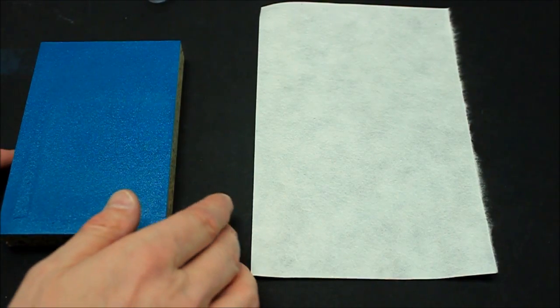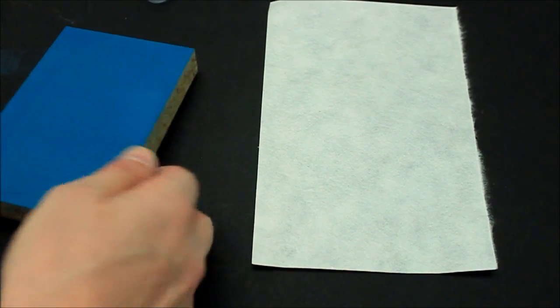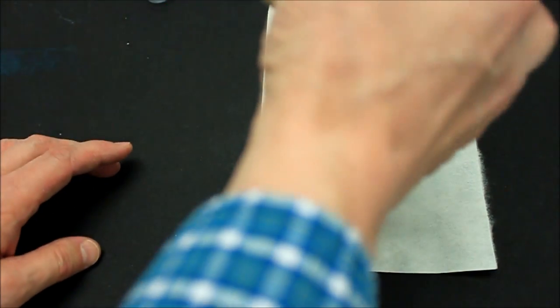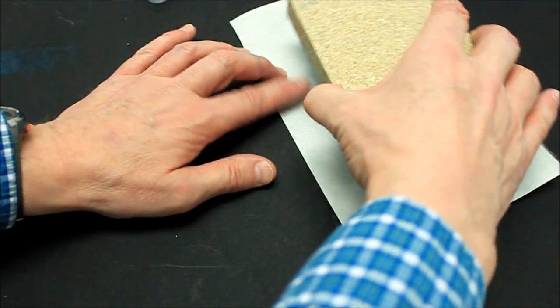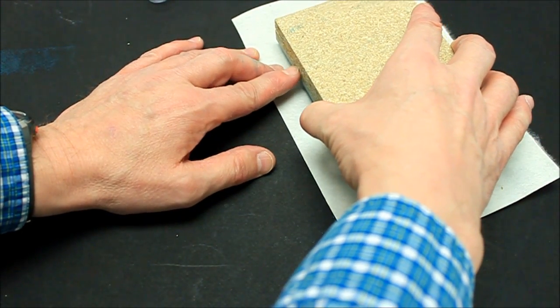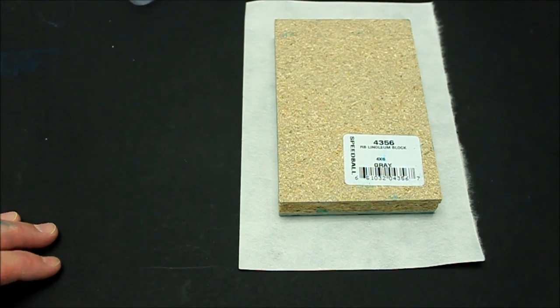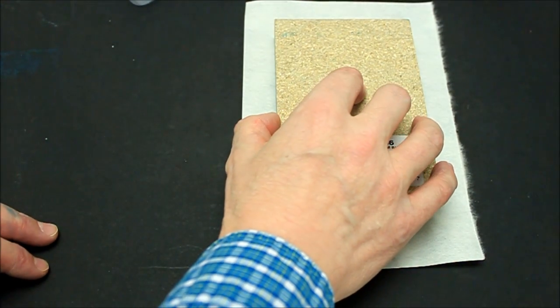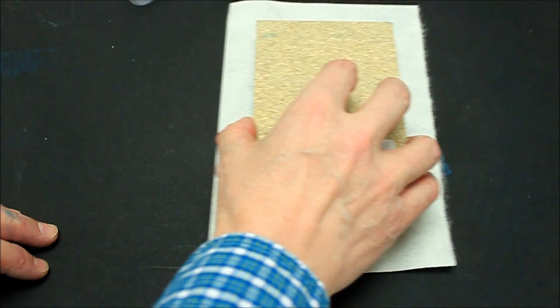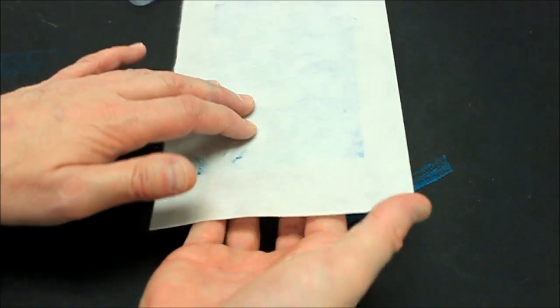Pick up the block by its sides and flip it over, centering on the paper ink side down. Press down lightly to stick the paper to the block. Hold the block by its sides and flip the block back over, keeping the paper attached.